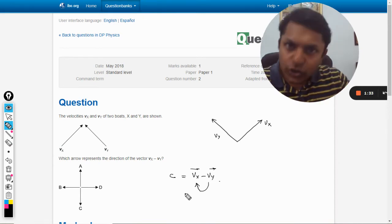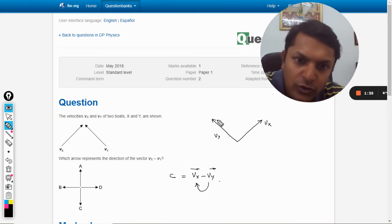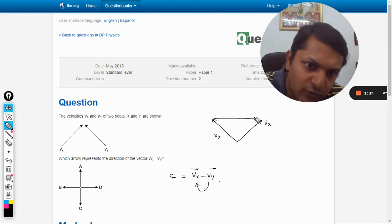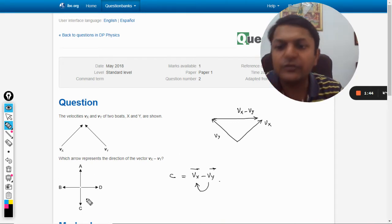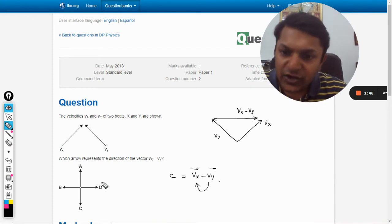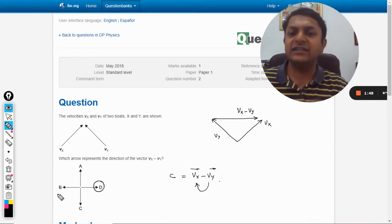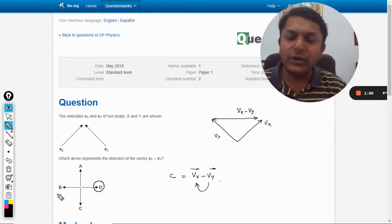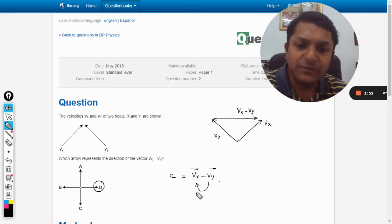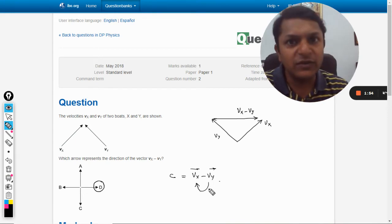We create a vector from the head of y towards x, so it will be from y towards x. So this vector is vx minus vy. So out of these four options a, b, c, d, we are having d as the answer.